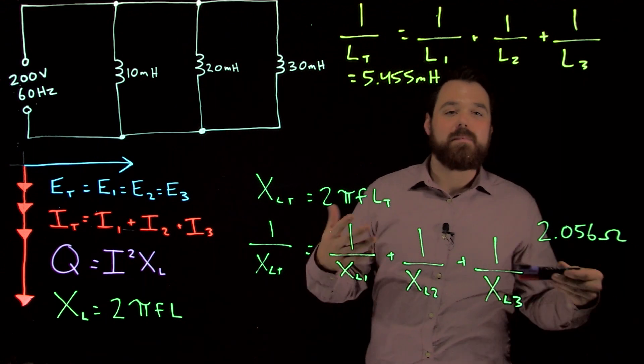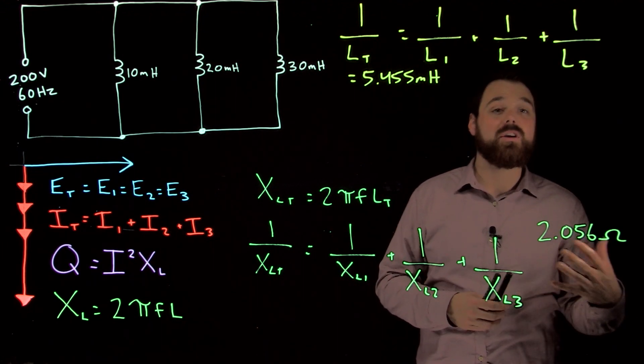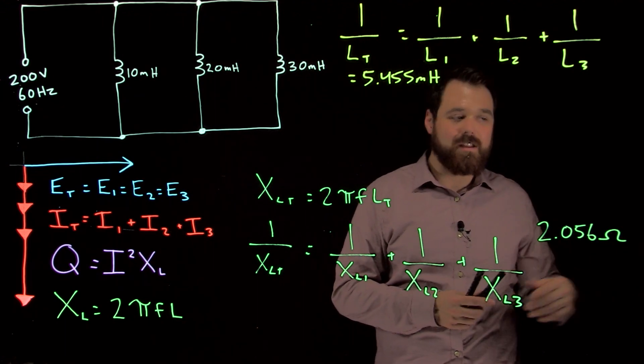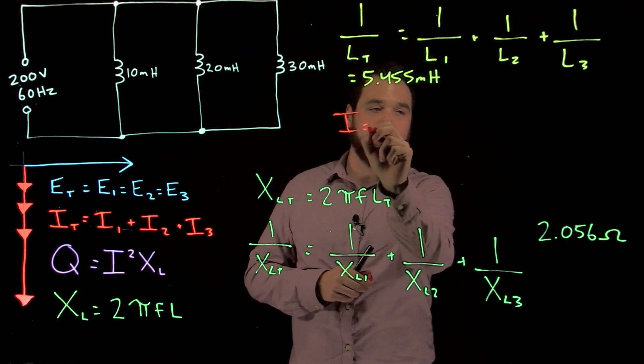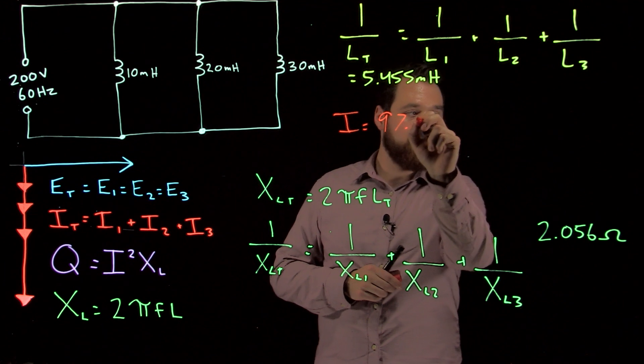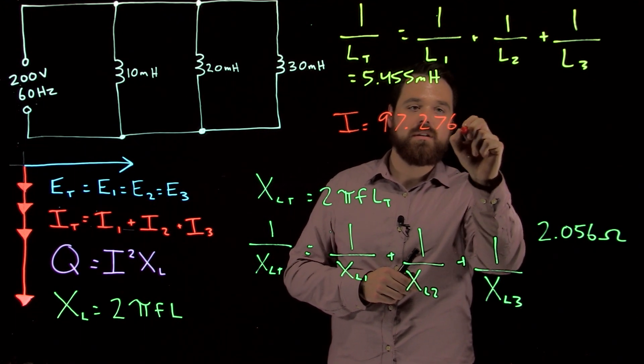Our last couple steps in most circuits are the current as well as the reactive power. And in this circuit right here, we should get I equals 97.276 amps.